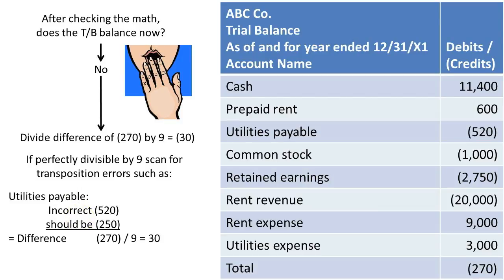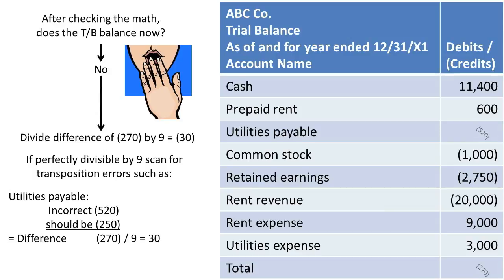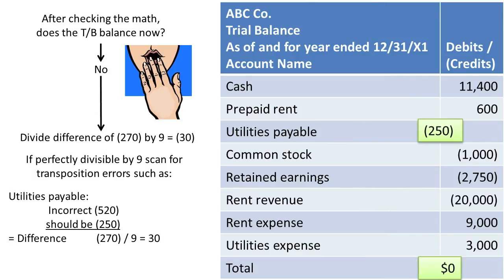We go and check our ledger accounts to see if maybe we wrote it in incorrectly. In this case, we wrote Utilities Payable as a credit of $520 when it really should be a credit of $250 — we would recognize that from the ledger. By removing the transposed number and putting in the correct number, our trial balance balances.